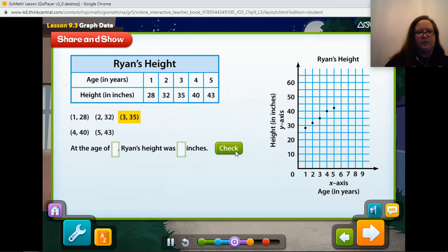What does the ordered pair 3, 35 tell you about Ryan's age and height? Well, if it's saying... Type your two answers into the sentence. If it's saying that his age is 3, that means at the age of 3, his height was 35 inches. Correct! When Ryan was 3 years old, he was 35 inches tall.